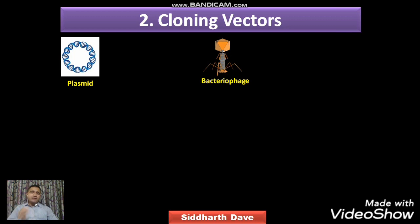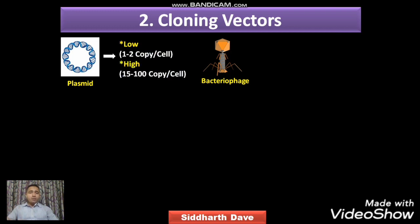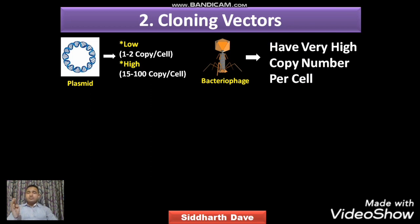Plasmid and bacteriophage are both used as cloning vectors depending on their copy number — that means how many copies they can make per cell. Some plasmids have a low copy number, making one or two copies per cell, while others have a very high copy number, producing 15 to 100 copies per cell. Bacteriophage also have a very high copy number per cell.